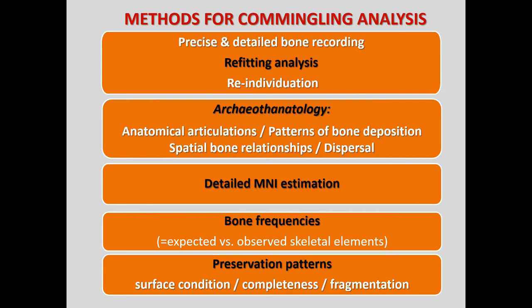For the study of commingled bones in particular, it is very important to apply a strong methodological package that includes very detailed recording and refitting of bones from the same skeleton, the study of articulations and bone dispersals with techniques from archaeothanatology, the optimal estimation of the minimum number of individuals, and most importantly a thorough analysis of preservation patterns and bone frequencies. In order to enable meaningful comparisons, the key is to standardize and apply all of these systematically.